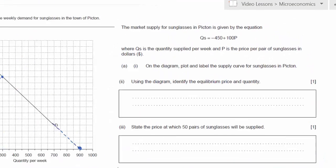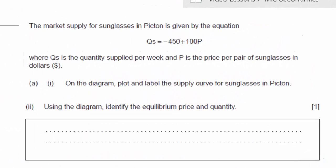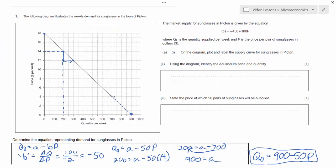Let's look at the next question. The market supply for sunglasses in Picton is given by the equation qs equals negative 450 plus 100p where qs is the quantity supplied per week and p is the price per pair of sunglasses in dollars. On the diagram plot and label the supply curve for sunglasses in Picton. Alright how are we going to plot supply in this diagram? We need to find a couple points first. The first point I would want to know is the price intercept of supply.